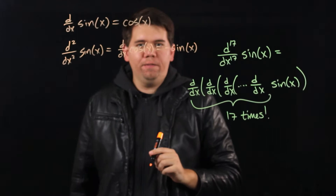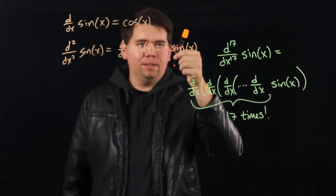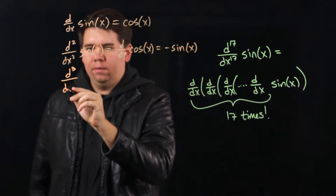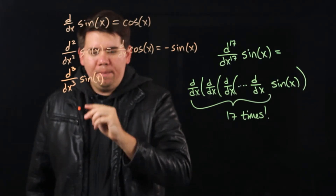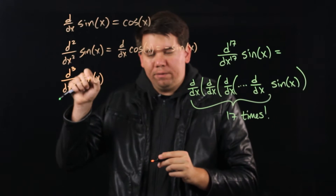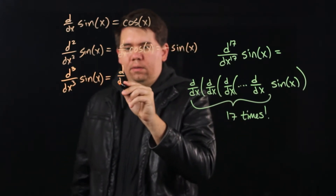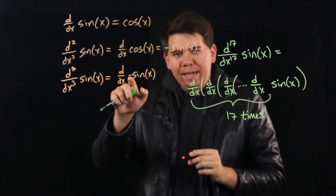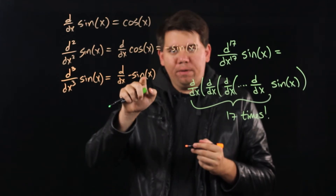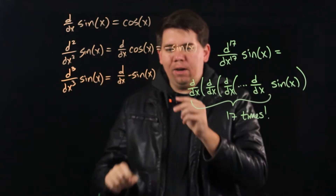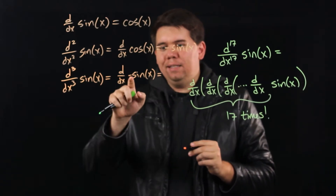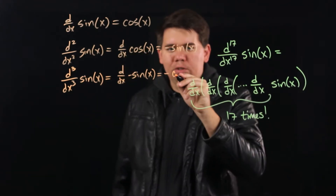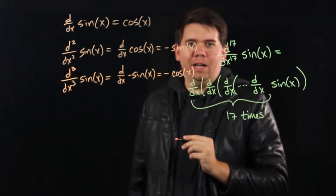So the derivative of sine of x is cosine of x, and the derivative of cosine of x is minus sine of x. Now if I want to find the third derivative of sine of x, that means I'm taking the derivative of the second derivative, which is the derivative of minus sine of x. Whenever you have a constant in front of a function, you can pull that out and then calculate the derivative. So this is just the negative of the derivative of sine of x, which gives negative cosine of x.